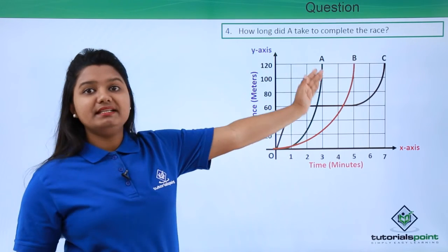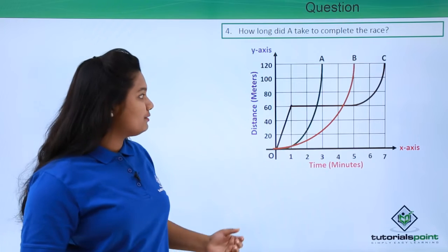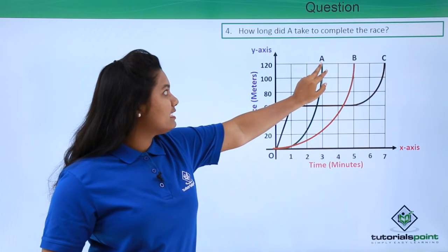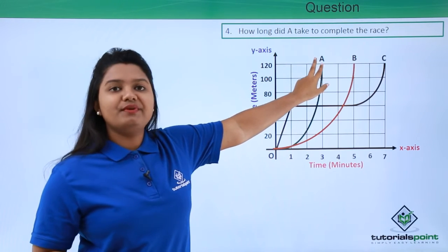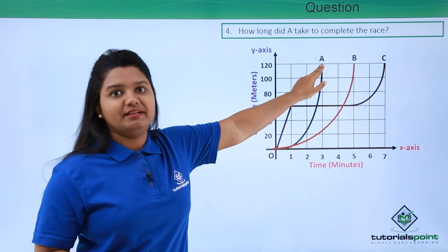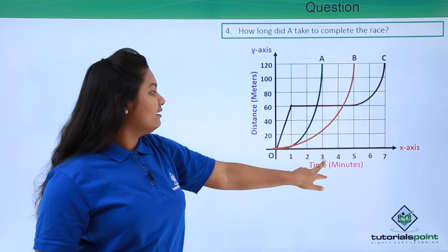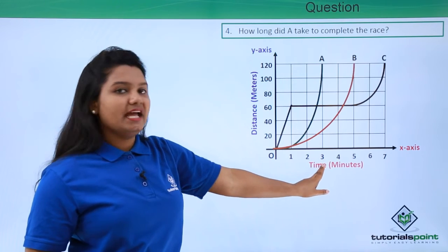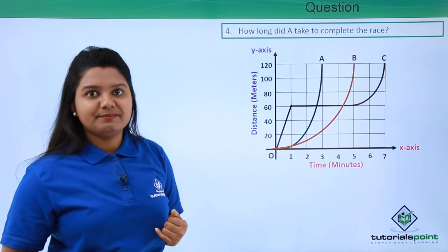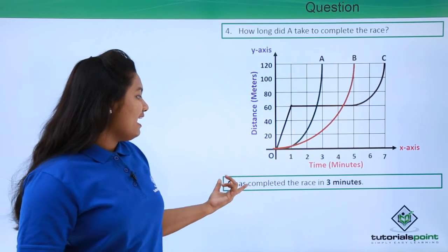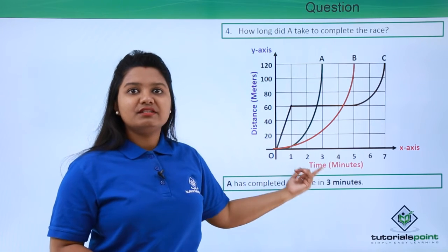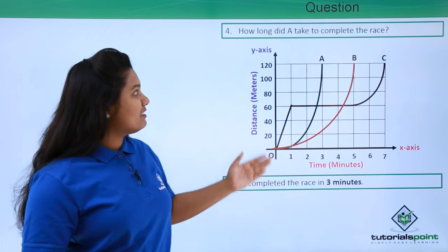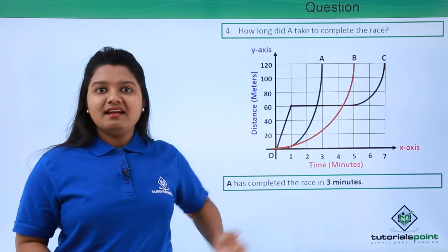Now how long did A take to complete the race? We have already seen it. We just need to calculate the time at this point when A has reached the finish line. This is representing the point where the time is three minutes, so A has completed the race in three minutes. This is the answer to this question.